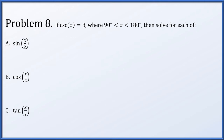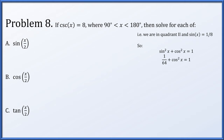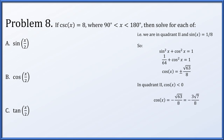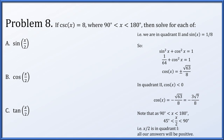In problem 8, if the cosecant of x equals 8 and x is between 90 and 180 degrees, we'll find the sine, cosine, and tangent of x/2. We're in quadrant 2, so sine of x is 1/8. Using the Pythagorean identity, cos of x equals plus or minus √63/8. Since we're in quadrant 2, cosine is negative: minus √63/8, which simplifies to minus 3√7/8. Also, since x is between 90 and 180 degrees, x/2 is between 45 and 90 degrees — so x/2 is in quadrant 1, meaning all of sine, cosine, and tangent of x/2 will be positive.